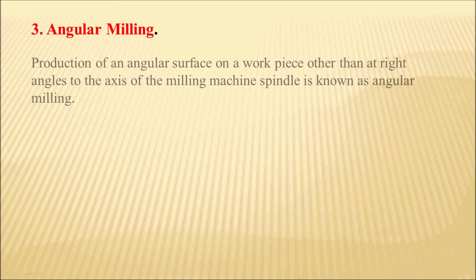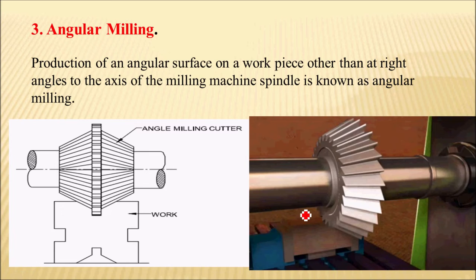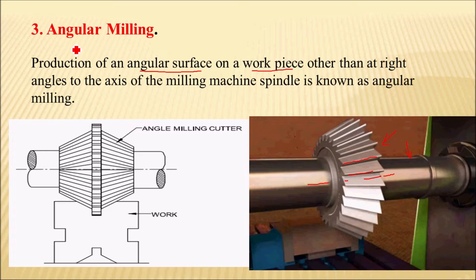The next operation is angular milling. You can see an angular milling cutter mounted on the arbor of the milling machine. This angular milling cutter has teeth which are cut at an angle to the axis of the cutter. Angular milling cutters are used for the production of angular surfaces on the workpiece. Production of a V-block is an example of angular milling.